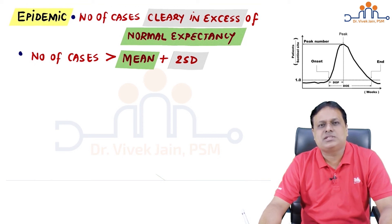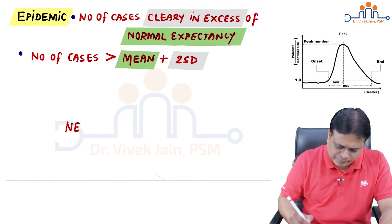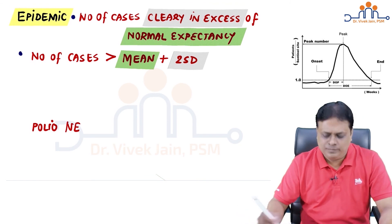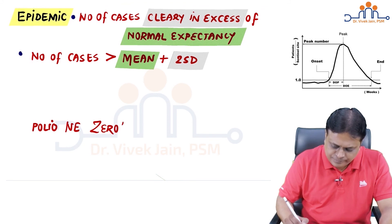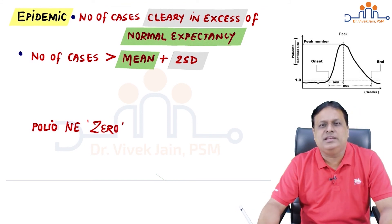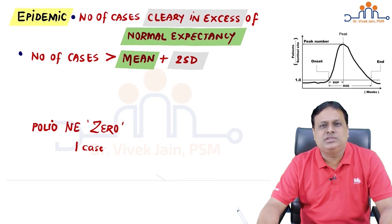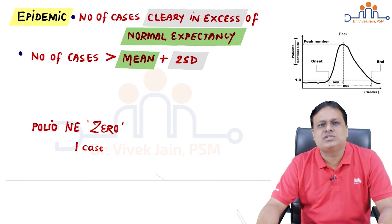We need to understand this definition because when we hear the word epidemic, we think of large numbers — but even a small number may be an epidemic. For example, what is the normal expectancy of polio in India right now? It is zero, because there has not been even a single case in the last nine years. If this year there is just one case of polio in India, that one case will be called an epidemic — a clear excess over the normal expectancy of zero.